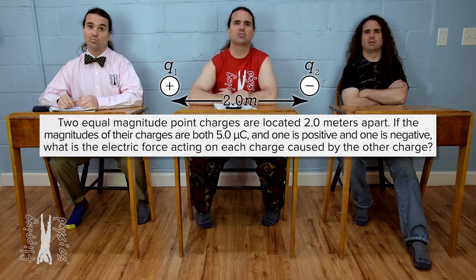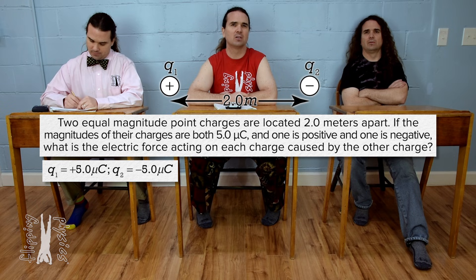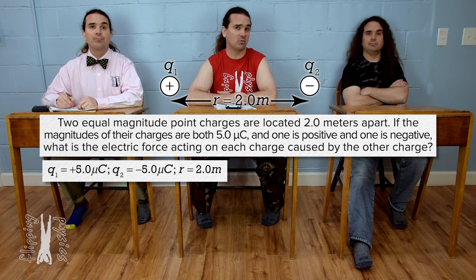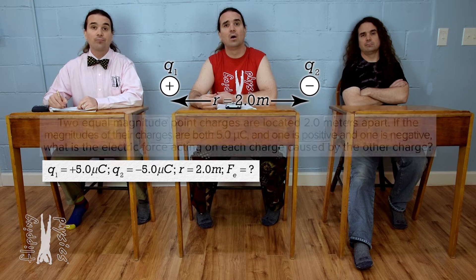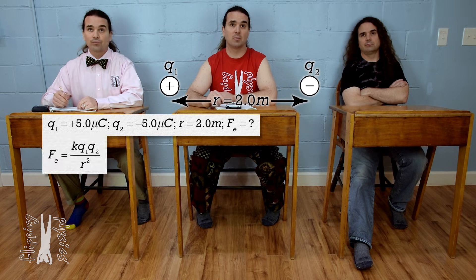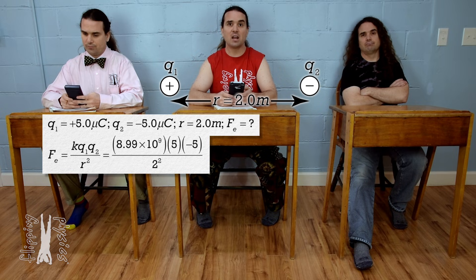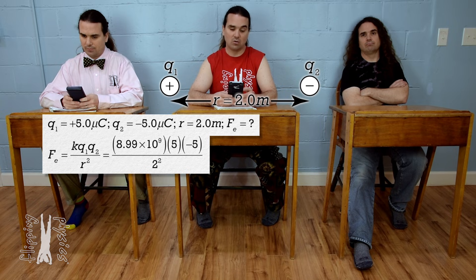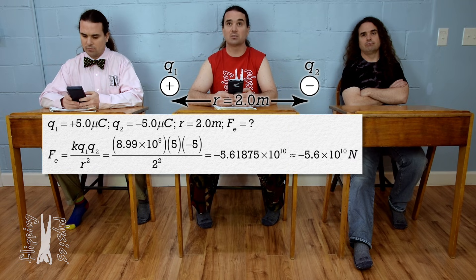Charge 1 equals positive 5.0 microcoulombs. Charge 2 equals negative 5.0 microcoulombs. R, the distance between centers of charge of the two charges, equals 2.0 meters. Electric force equals Coulomb constant times charge 1 times charge 2 divided by r squared. That is 8.99 times 10 to the 9th times 5 times negative 5 divided by 2 squared, giving negative 5.61875 times 10 to the 10th, or negative 5.6 times 10 to the 10th newtons with two significant digits — about 56 billion newtons, which is probably not right.